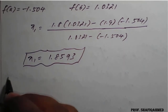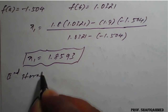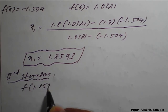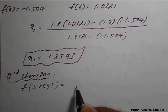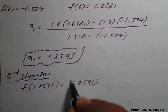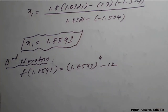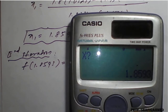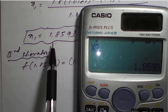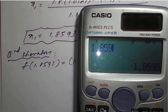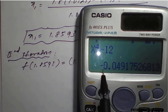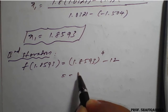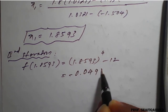This value will be applied in the next iteration. For the second iteration, we check f(1.8593): that is 1.8593⁴ − 12. Using the calculator with x = 1.8593, we get a negative value: −0.04917, which we take as −0.0492. Since it is negative, we need to update the bracket.